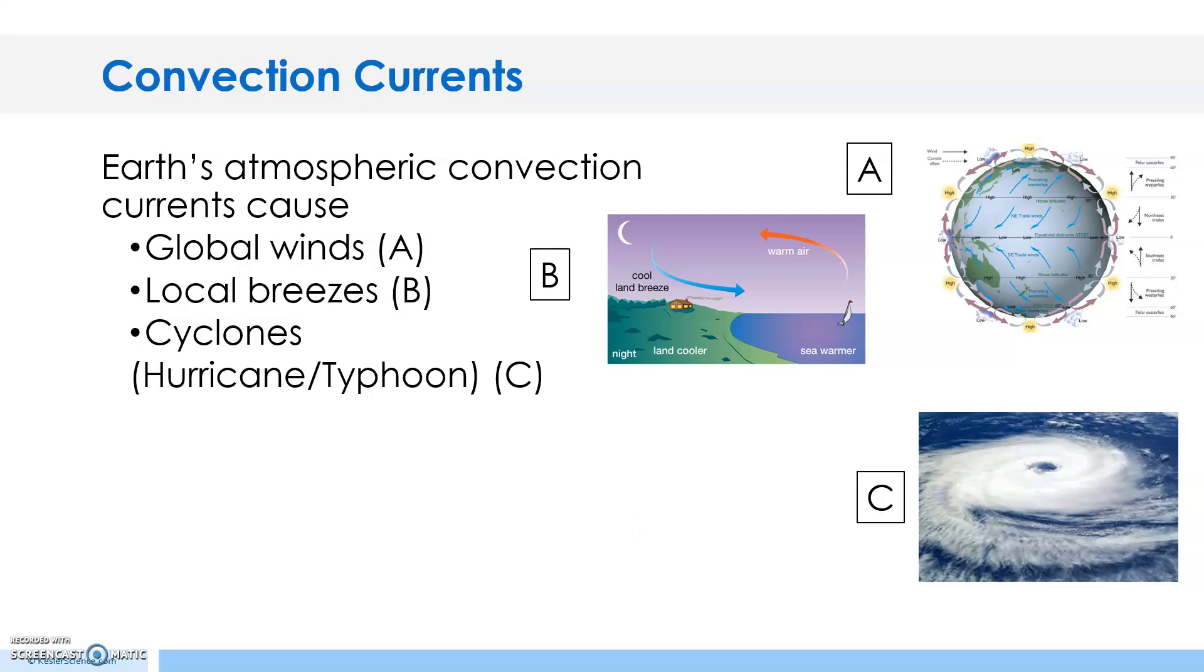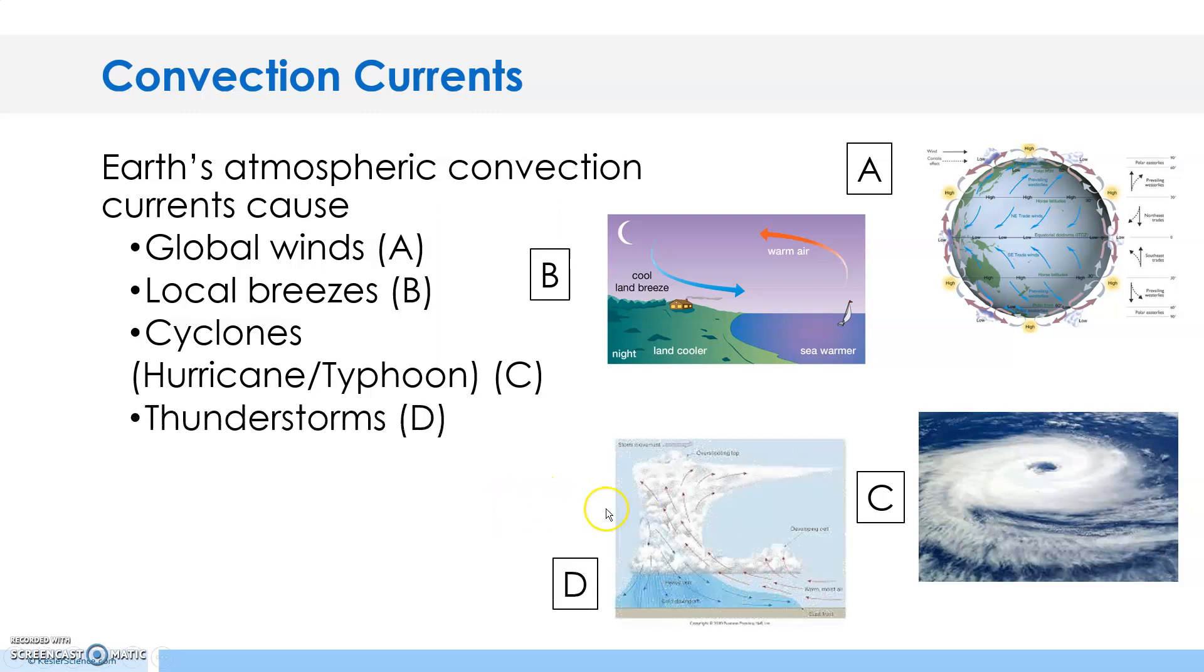...global winds as you see in diagram A, local breezes as you see in diagram B, and cyclones, hurricanes, and typhoons as you see in diagram C. We also get thunderstorms from convection currents.